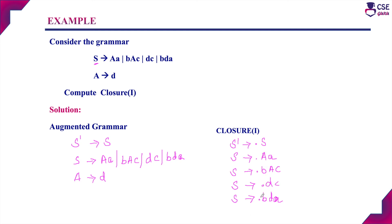We now consider all these productions. In S derives dot AA, after the dot there is a non-terminal A. So for the production of A, we also add a dot: A derives dot D. We have now added the dot-production for A as well. For the remaining productions, after the dot only terminal symbols appear, so no further expansion is needed. This completes the closure of I.